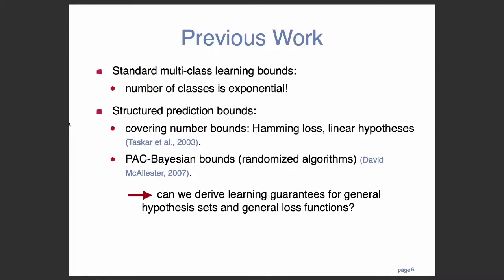And the most obvious way to kind of analyze structure prediction is basically to take out the structure, right? I can think of it as a giant multi-class classification problem. The issue with that is that when you're dealing with problems like sequence tagging, the number of effective classes tends to be exponential. So the bounds that you would get just by applying multi-class classification theory tends to be kind of, for lack of a better term, useless. And existing structure prediction bounds have tended to be only in specific cases, unfortunately. So Ben Taskar in 2003 came up with bounds for the Hamming loss with linear hypotheses. And Dave McAllister came up with PAC-Bayesian bounds for specific randomized algorithms. Ideally, you would want to be able to derive general learning guarantees that apply for general hypothesis sets and general loss functions. So that no matter what type of different structure prediction problem we have, we can have a good understanding of how and why things work, if they work.